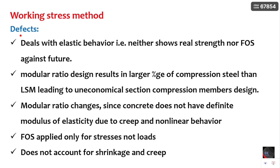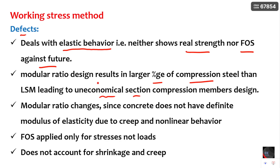Coming to the defects of working stress method: it deals with only elastic behavior and neither shows real strength nor provides a proper factor of safety against failure. Also, the modular ratio design results in a large percentage of compression steel compared to the limit state method, leading to uneconomical sections, especially in compression member design — the larger section wastes material. Furthermore, the modular ratio changes because concrete is not elastic and varies due to creep and non-linear behavior.